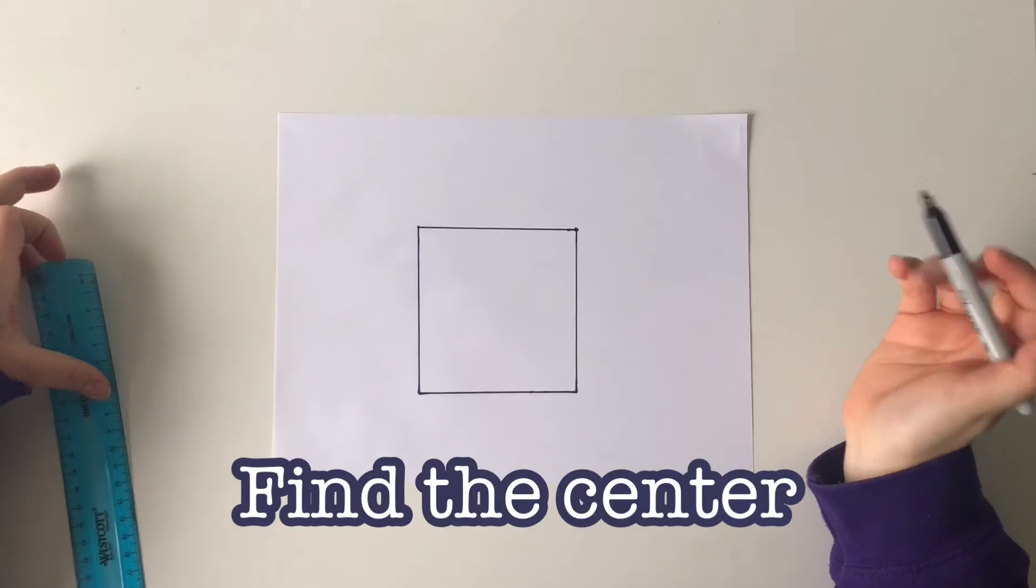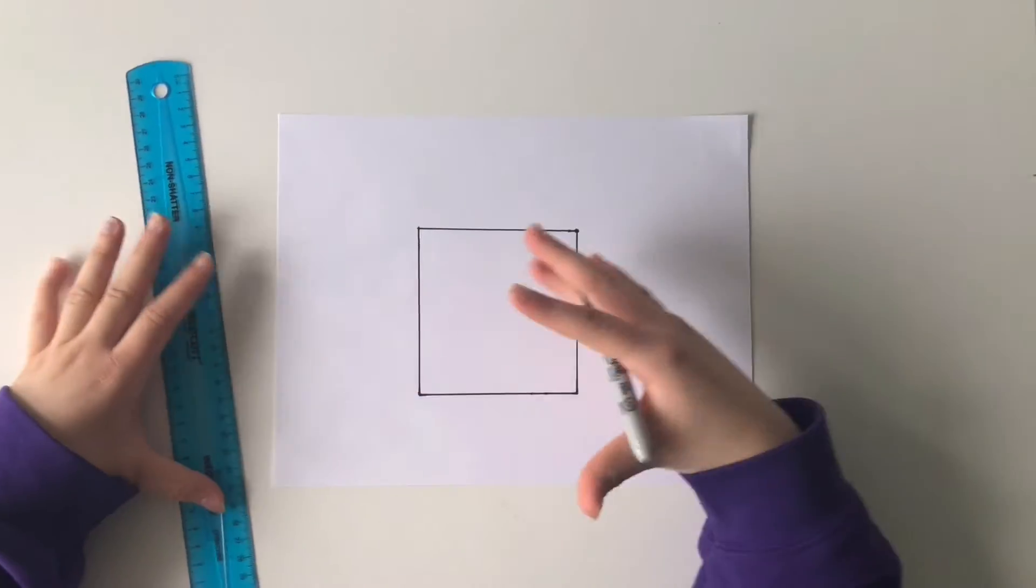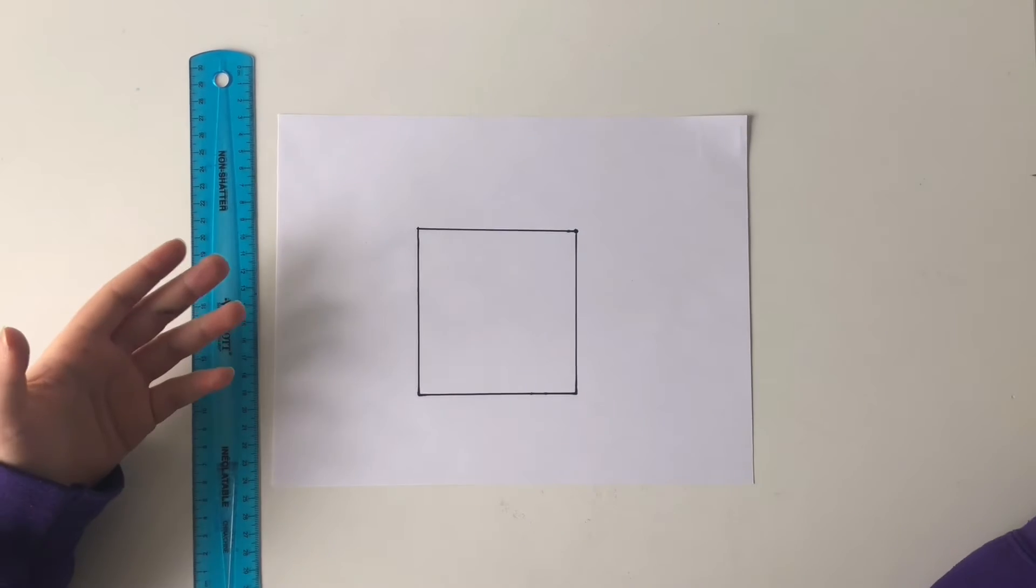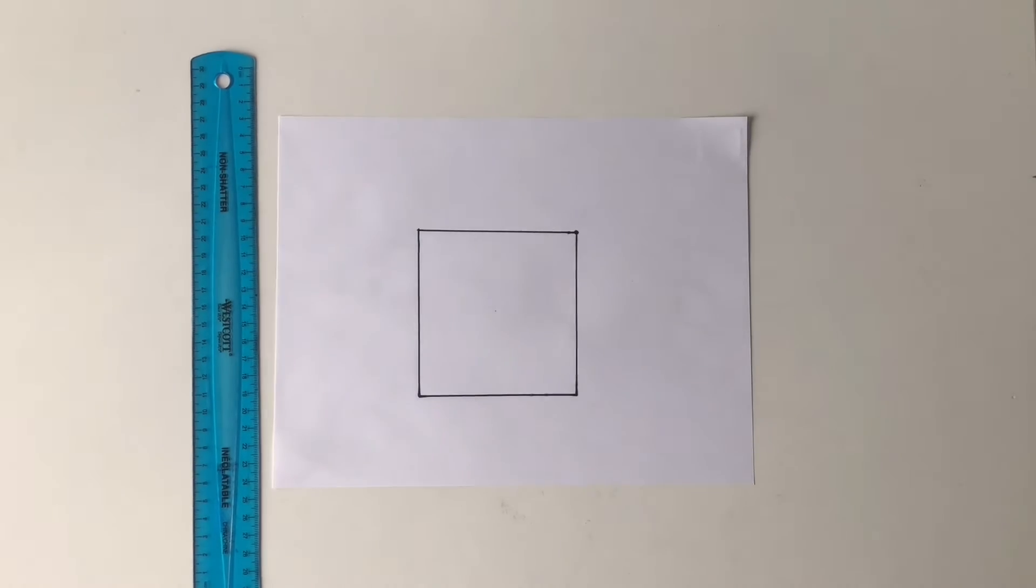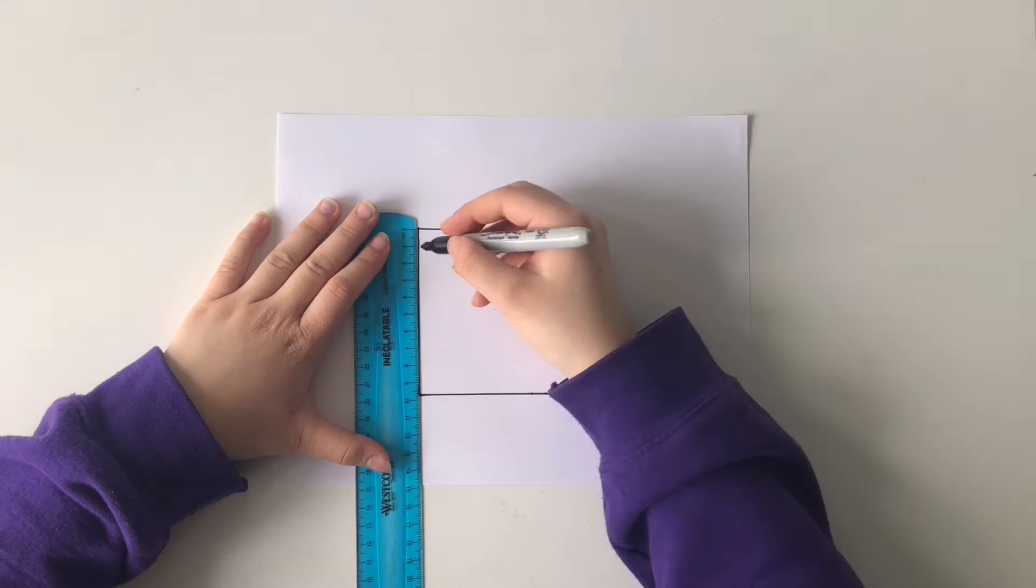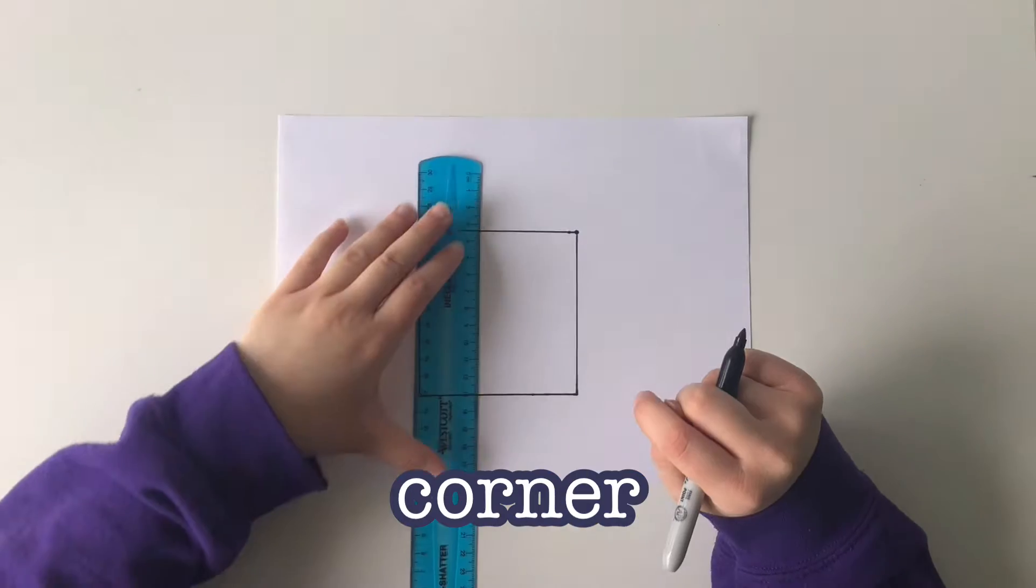Next, what you're going to want to do is find the center of your square. I'm basically just going to guess it, but you can use measurements to find it if you want to make yours perfect. And just put a very tiny dot there. I don't even know if you can see that. It's like right here. You're going to now repeat that square with this circle being the bottom left corner.